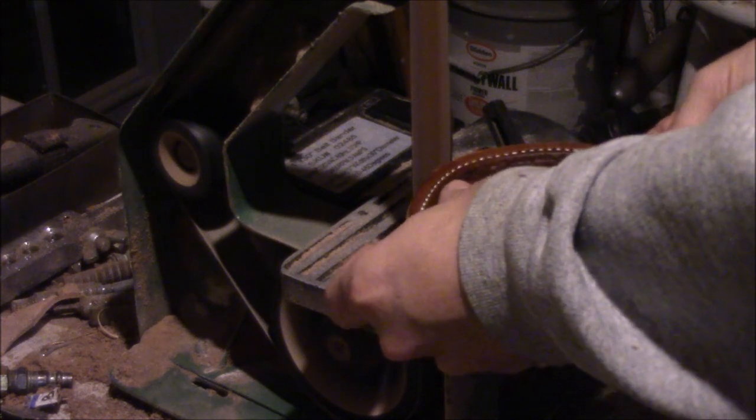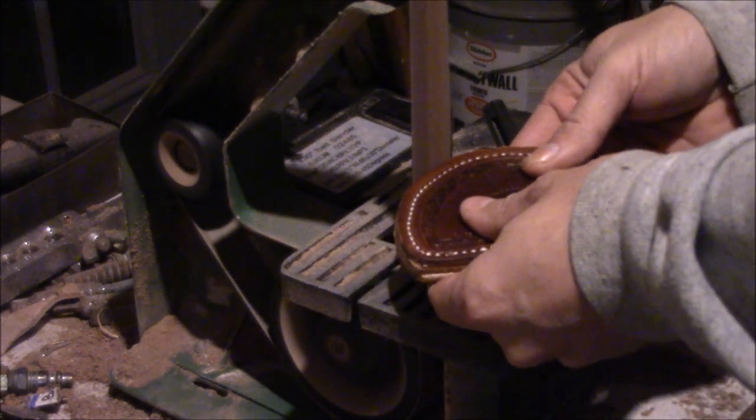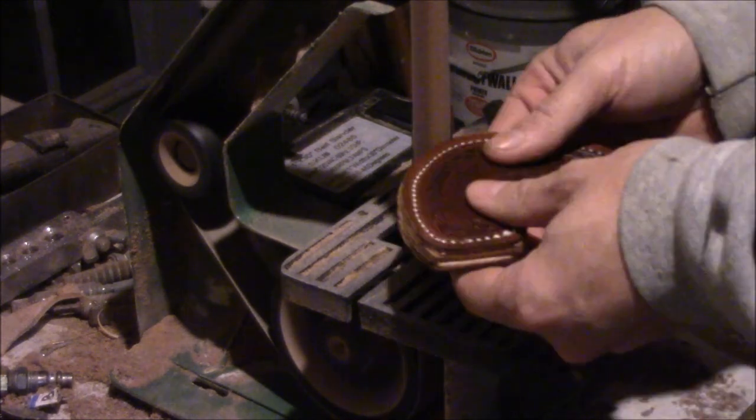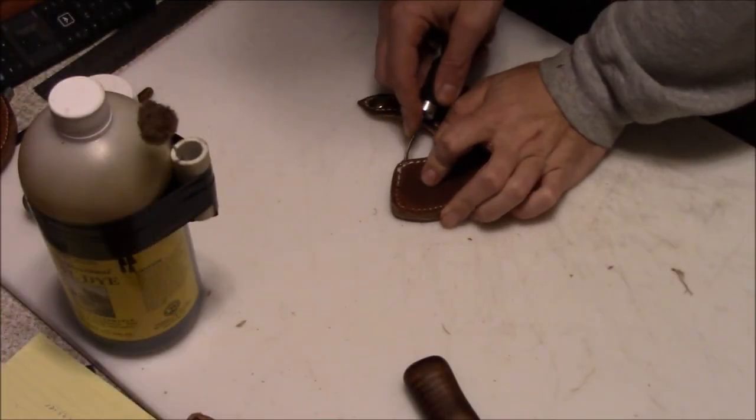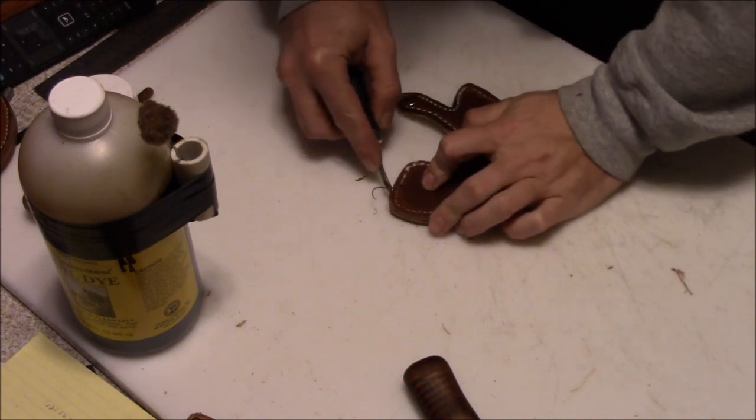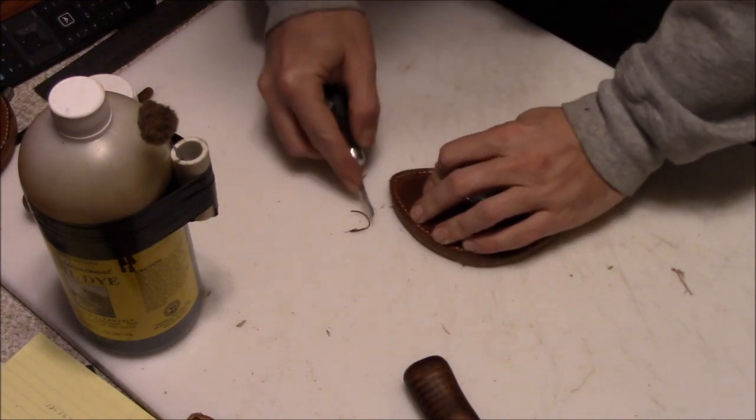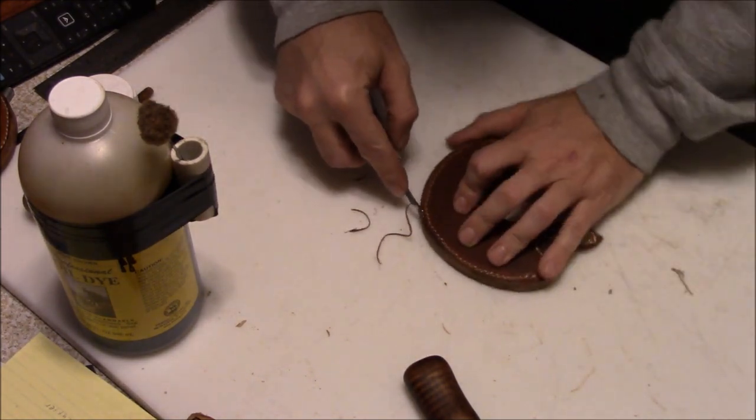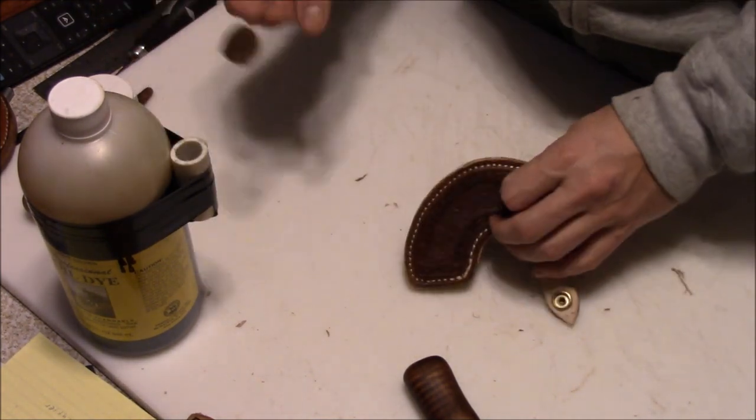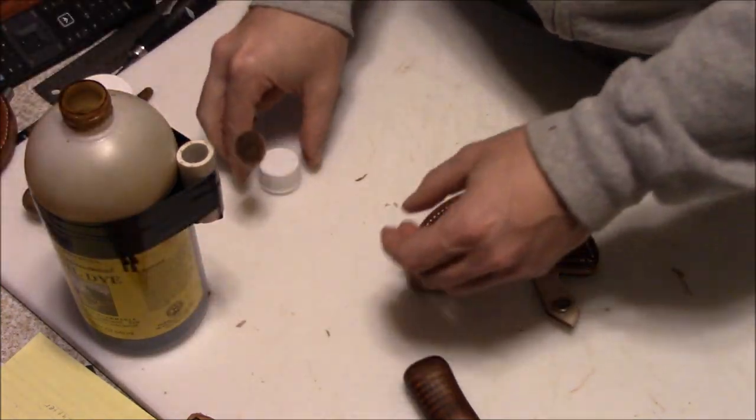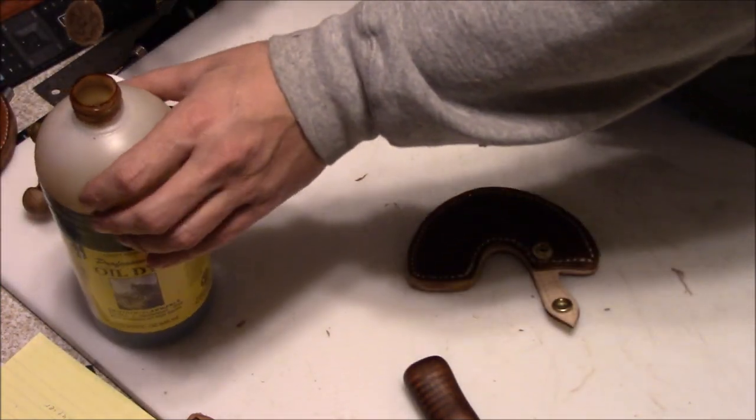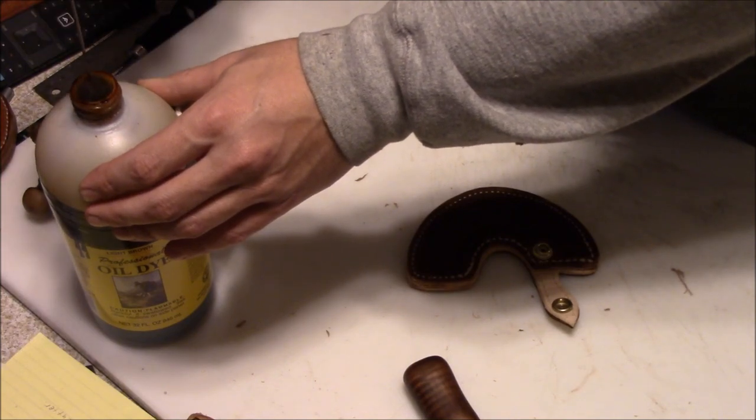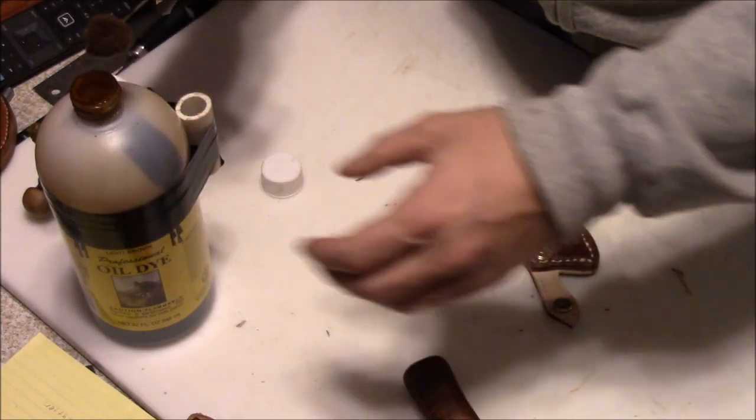And it's to the grinder to even up the edges. It's just a little cheap one-by-thirty belt sander. And since you sand the edges, you gotta go back into your edge beveling if you've done it already. Kind of got to usually touch it up and do it again. But then we're gonna use some dye on the edges and then some gum trag, some gum burnisher, to finish up those edges.